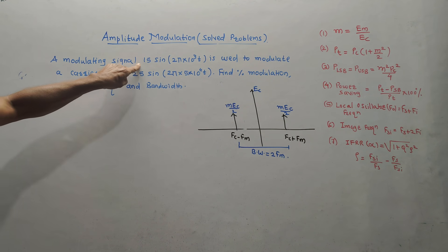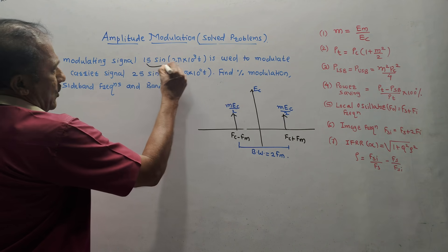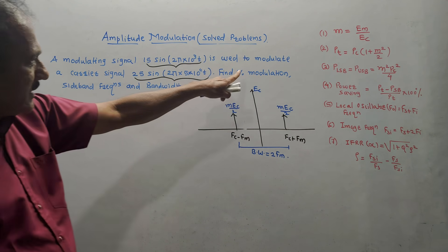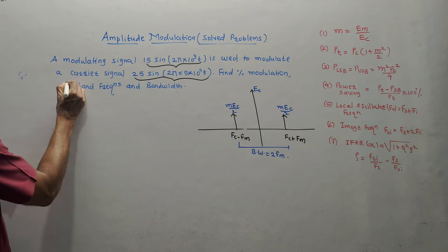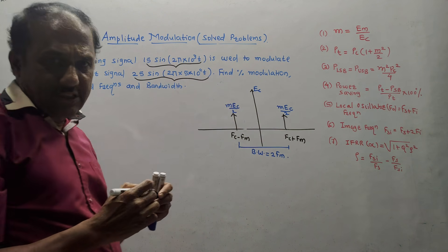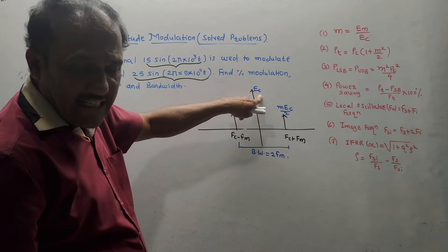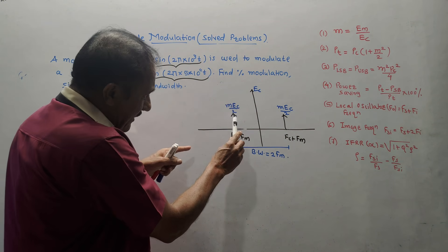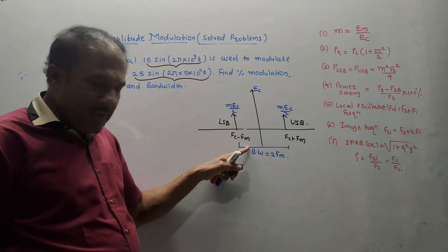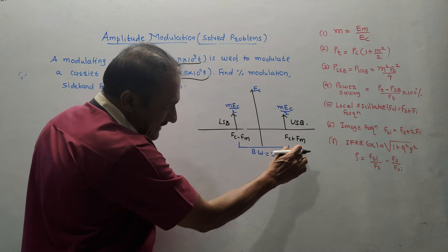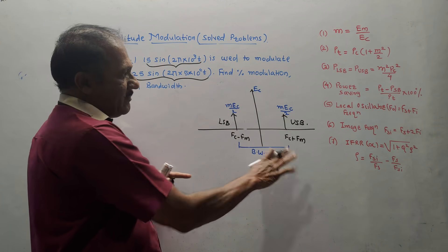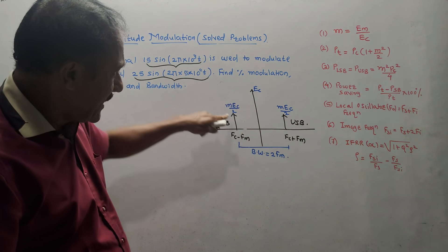The first problem: a modulating signal equation is given, which is used to modulate a carrier signal. A second equation is given for the carrier signal. Find percentage modulation, sideband frequencies, and bandwidth. For reference, I have drawn the spectrum for the amplitude modulated wave. The center part is EC, the amplitude of the carrier wave. LSB frequency is FC minus FM, USB frequency is FC plus FM. Bandwidth is FC plus FM minus (FC minus FM), which becomes 2FM. Amplitudes of upper and lower sidebands are MEC by 2.